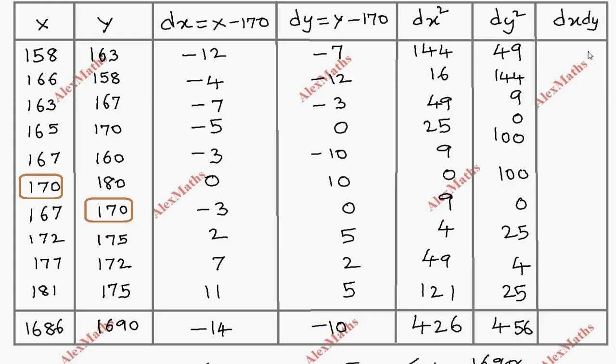Now dx into dy, the product: 84, 48, 21, 0, 30, 0, 0, minus 15, 4, 55. Wait, let me recalculate: 84, 48, 21, 0, 30, 0, 0, 10, 14, 55. The total is 262.